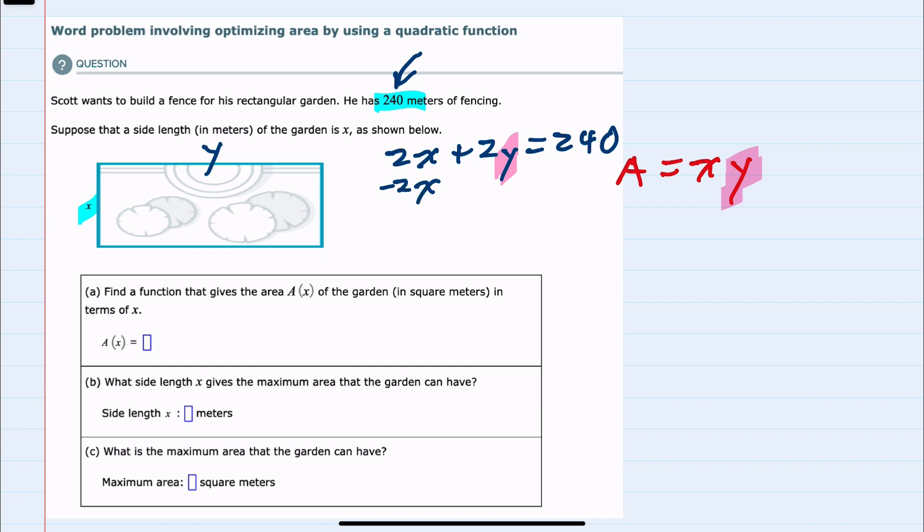I could subtract the 2x over and have 2y on the left-hand side equals a negative 2x plus 240 and then divide by 2 on both sides. That would give me a y equals. Notice on the right-hand side, each term is being divided by 2. So when I simplify, I want to make sure that I'm dividing each term by 2, and since that does allow me to simplify the first term...